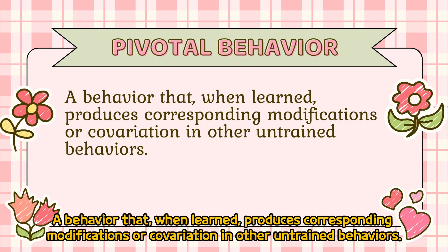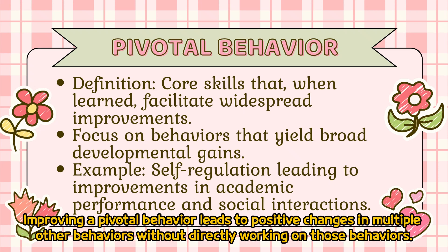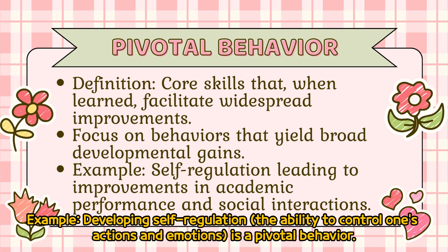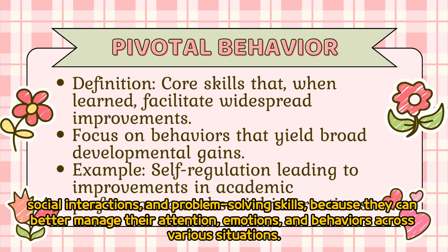Pivotal behavior is a behavior that, when learned, produces corresponding modifications or covariation in other untrained behaviors. Pivotal behaviors are core skills that, once acquired, result in wide-ranging improvements across other areas of development. Improving a pivotal behavior leads to positive changes in multiple other behaviors without directly working on those behaviors. For example, developing self-regulation — the ability to control one's actions and emotions — is a pivotal behavior. A child who improves in self-regulation is likely to see improvements in academic performance, social interactions, and problem-solving skills because they can better manage their attention, emotions, and behaviors across various situations.